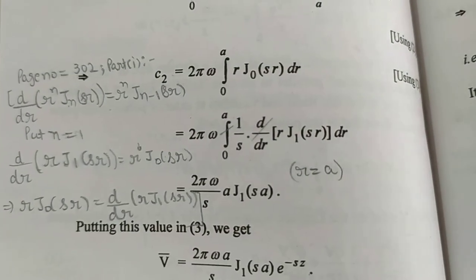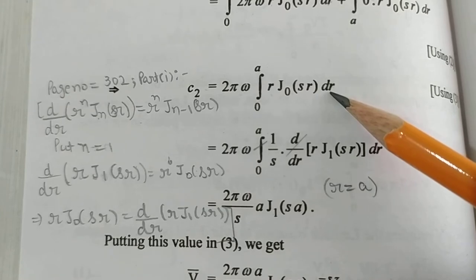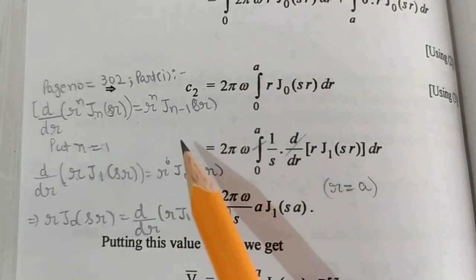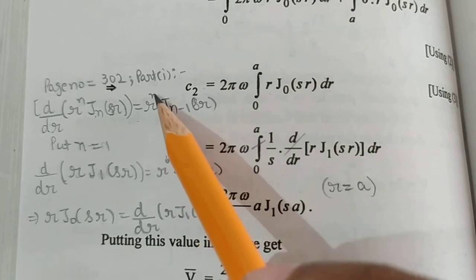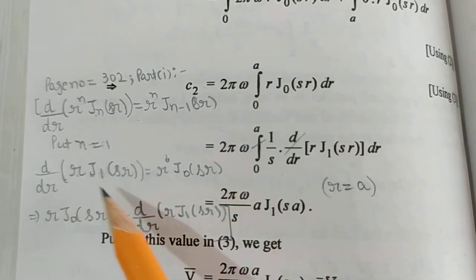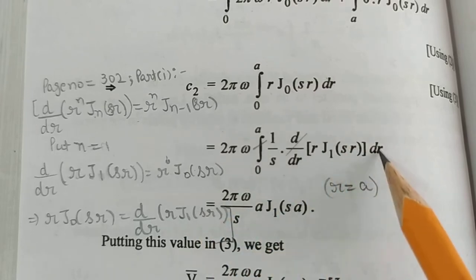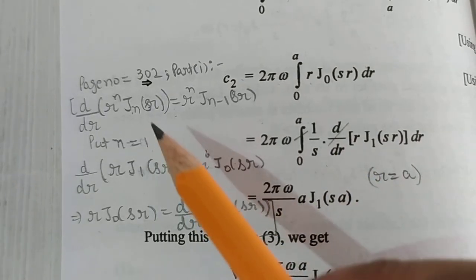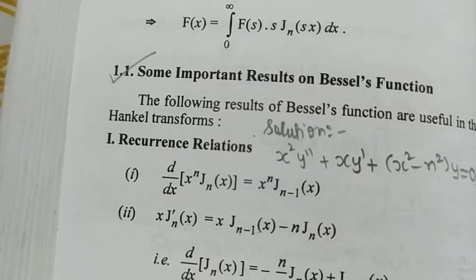Next, we need to find the value of ∫ R·J₀(SR) dR. For this we use the recurrence relation. We put n = 1: d/dR [R¹·J₁(SR)] = R¹·J₀(SR). Rearranging, R·J₀(SR) = d/dR [R·J₁(SR)], and we bring this to the right-hand side. So the value of R·J₀(SR) is (1/S)·d/dR [R·J₁(SR)].